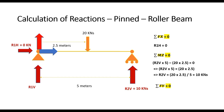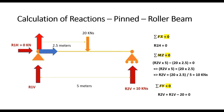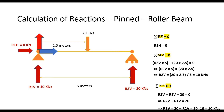Applying the last equilibrium condition, σFy = 0: R2V and R1V together resist the 20 kN load. R2V is positive (pointing upwards along the positive global Y axis), R1V is also assumed positive, and the 20 kN load is negative (acting opposite to the positive global Y axis). So R2V + R1V − 20 = 0, and solving this gives R1V = 10 kN.